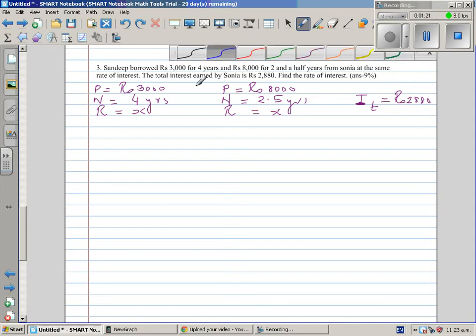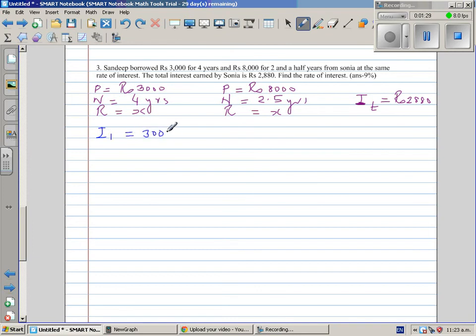So let me call this I1. Interest in the first situation would be your principle 3,000 times x over 100 times 4. So this 100 gets cancelled. So your I1, interest in the first situation is 4 times 3 is 12. So this is 120x.